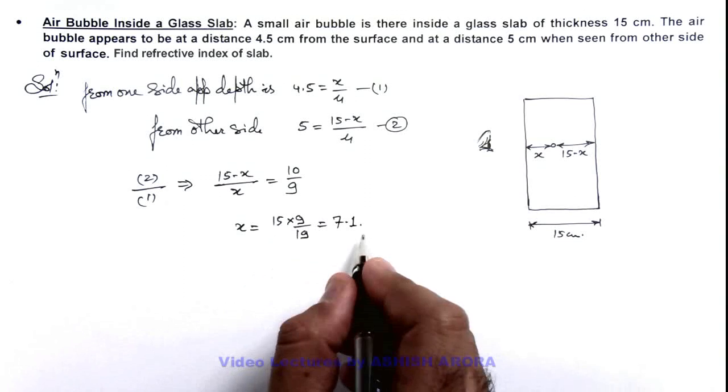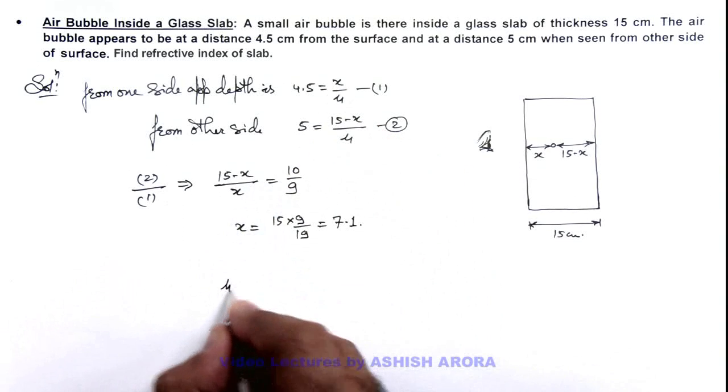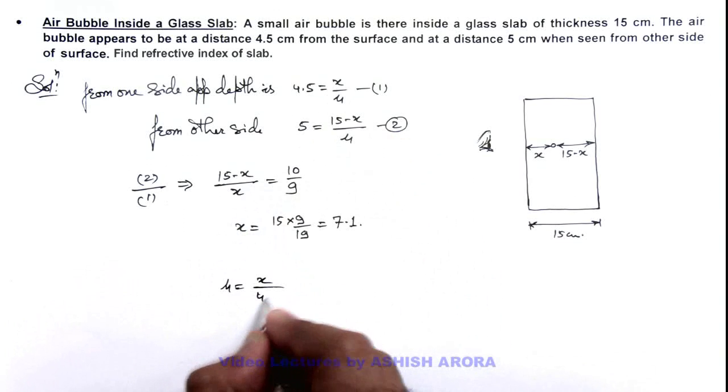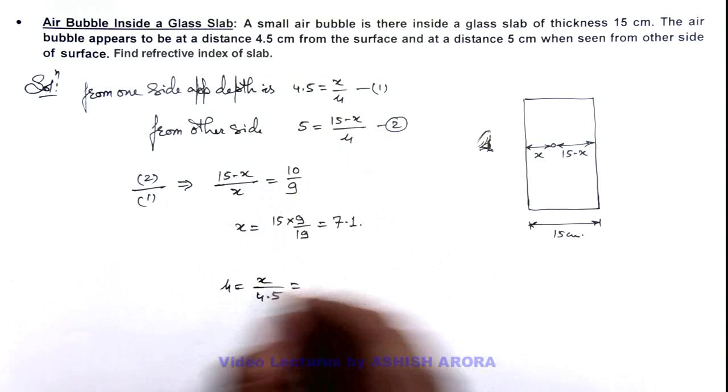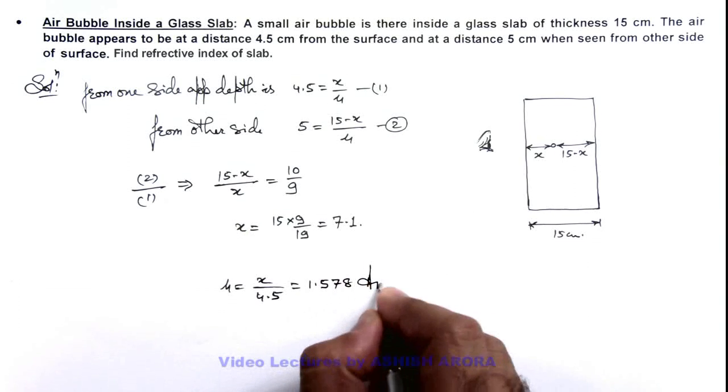If this is the value of x, we can substitute the value of x to get the value of μ, which is x by 4.5. On substituting the value we are getting it to be 1.578, that is the answer for this problem.